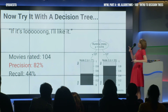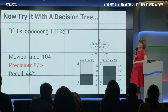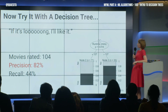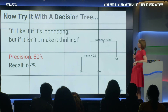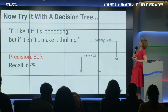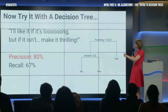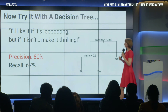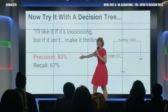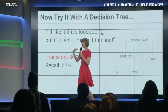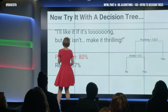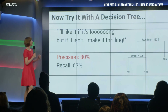I didn't have to have such a simple rule — I could have gone for a slightly more complicated one. So let's have two nodes. Oh dear. I'll like it if it's long, but if it isn't, let's have a thriller. Slightly lower precision, but unfortunately this now covers two thirds of my movie preferences in that set. So — simple creature, simple creature.